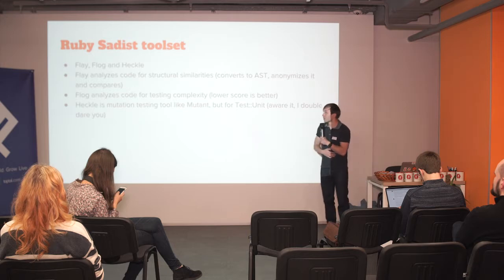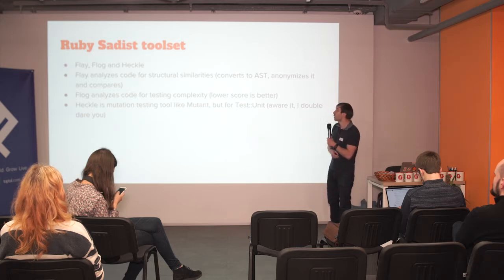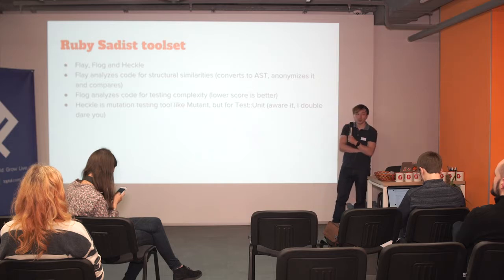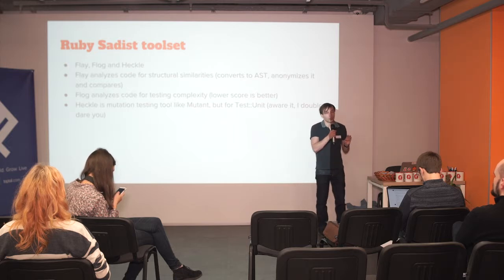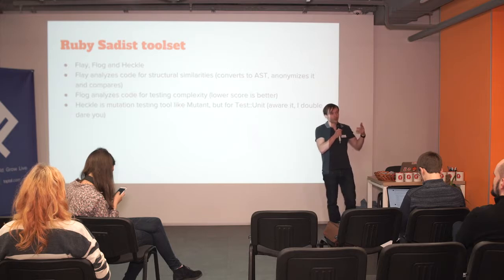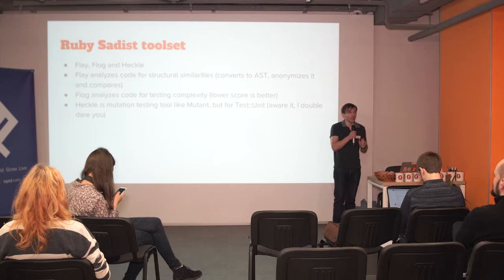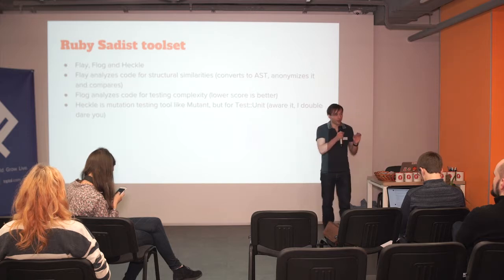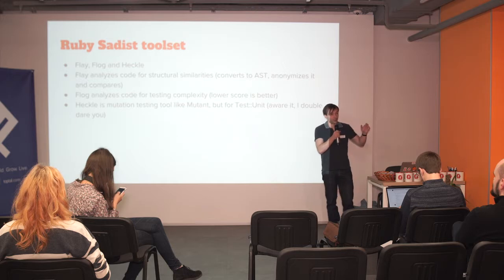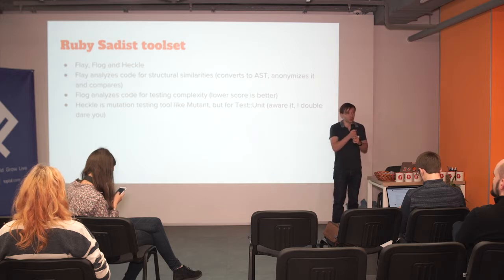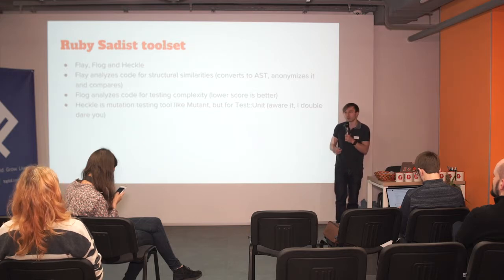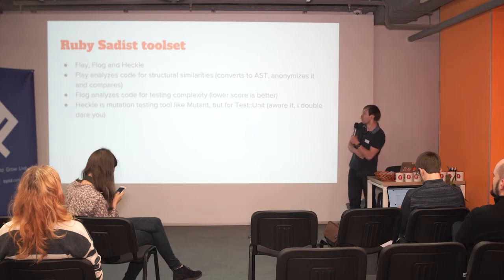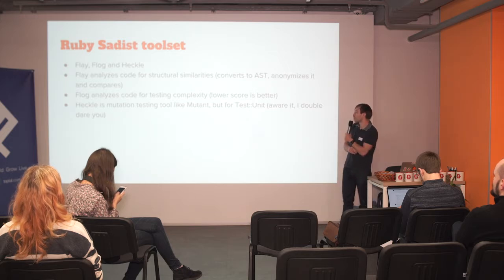Ending up with the Ruby metric tool set: Flay, Flog, and Heckle. Flay analyzes code for structural similarities in a very interesting manner — it parses your Ruby code, converts it to anonymized abstract syntax trees, and compares those abstract syntax trees. If it detects that you have similar structures in different places of your code, it marks them and shows that you have possible code duplication. Flog just analyzes code for cyclomatic complexity — the lower score you have, the better. And Heckle is a mutation testing tool like Mutant, but for TestUnit.